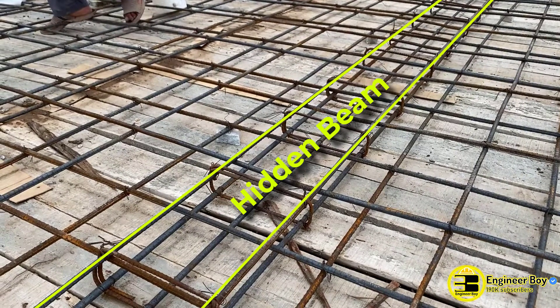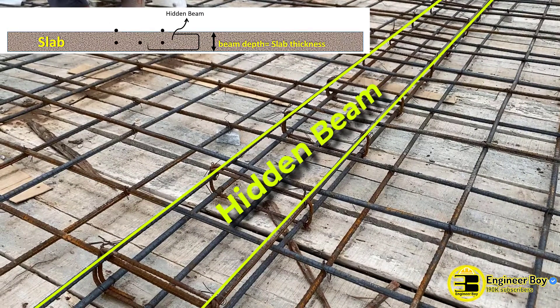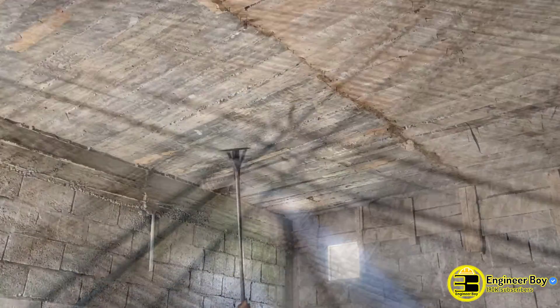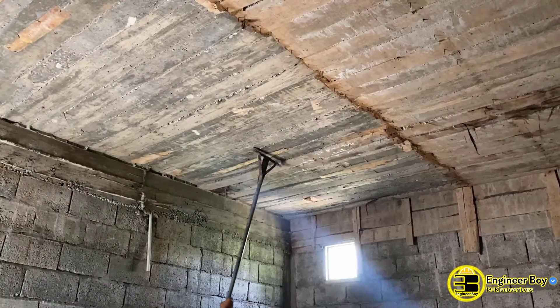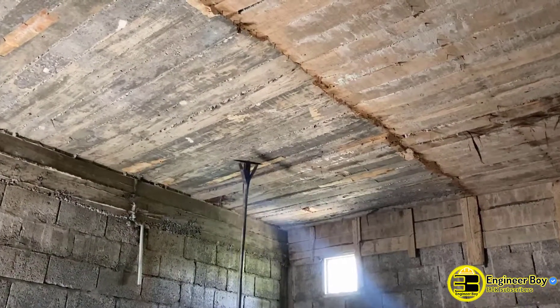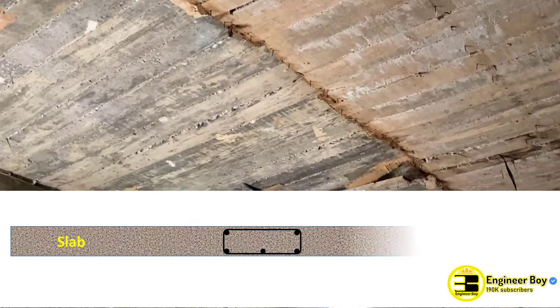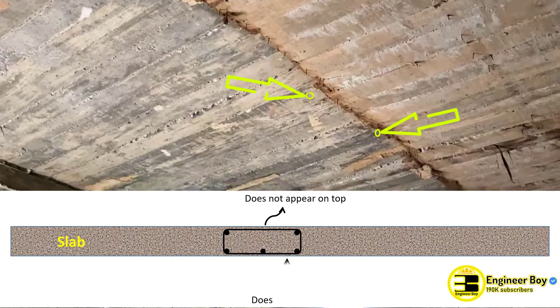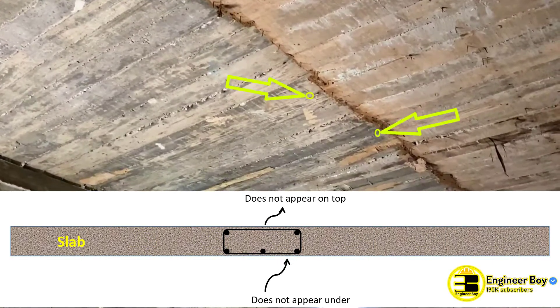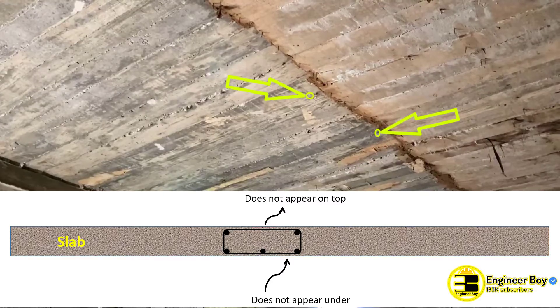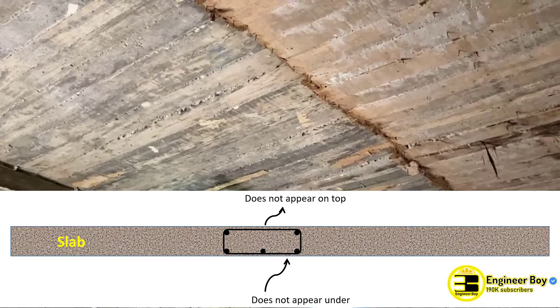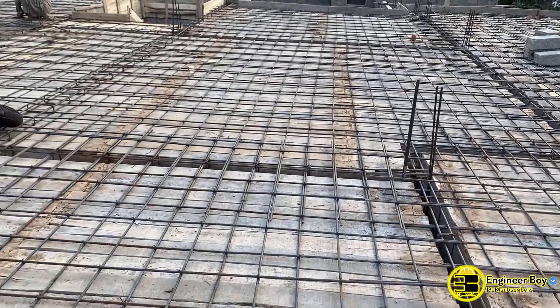This is known as the hidden beam because its depth is equal to the thickness of the slab. So after the slab's construction, it does not appear in the building's interior and even on the slab's surface. As you can see,